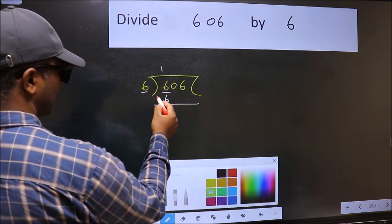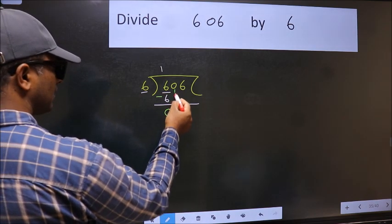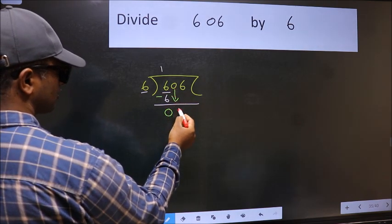Now we should subtract. We get 0. After this, bring down the beside number. So 0 down.